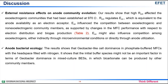Anode potential might also influence competition among exo-electrogens, either indirectly through microenvironmental conditions or directly through anode utilization. Anode bacterial ecology: The results show that Geobacter-like cell dominance in phosphate-buffered MFCs would have headspace filled with nitrogen. This shows that the initial buffer species might not be an important factor in terms of Geobacter dominance in mixed-culture systems, in which bicarbonate can be produced by other community members.